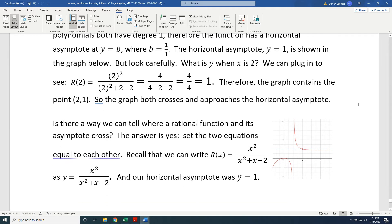But look carefully. What is y when x = 2? We can plug in to see: R(2) = (2²) / (2² + 2 - 2) = 4 / (4 + 2 - 2) = 4/4 = 1. Therefore, the graph contains the point (2, 1). So the graph both crosses here and approaches here, the horizontal asymptote.